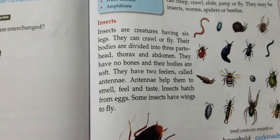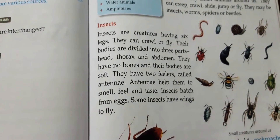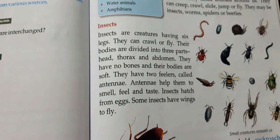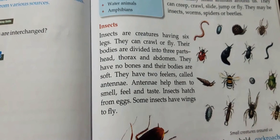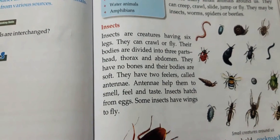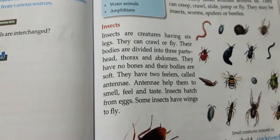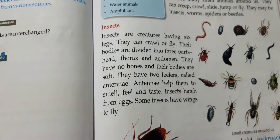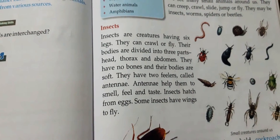Now about insects. Insects are creatures having six legs. They can crawl or fly. Their bodies are divided into three parts: head, thorax and abdomen.